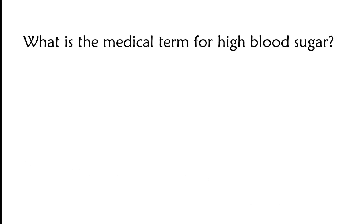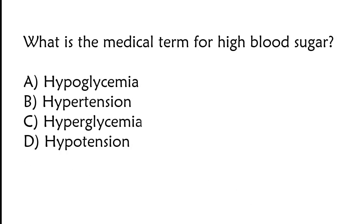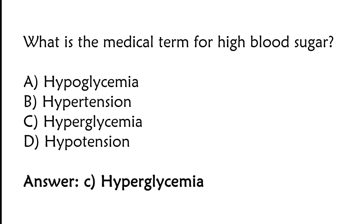What is the medical term for high blood sugar? Options: hypoglycemia, hypertension, hyperglycemia, hypotension. The correct answer is option C: hyperglycemia is the medical term for high blood sugar.